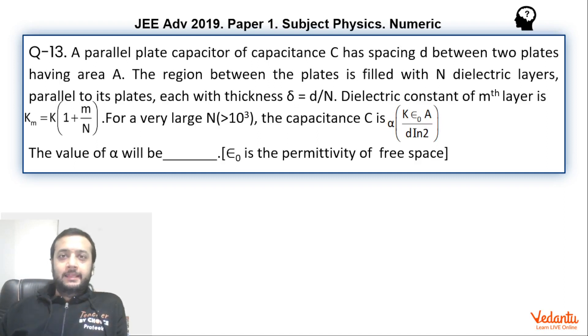Hi dear students, let's see this question that came in JEE Advanced Physics section Paper 1 in the year 2019. The question was from the topic of capacitors and was a numeric type question. The question was simple.